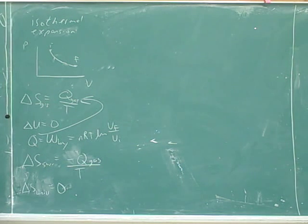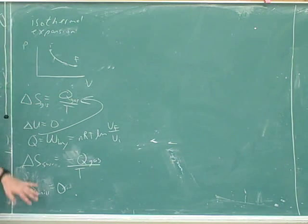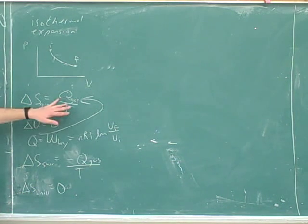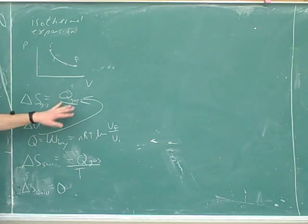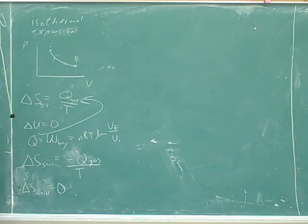Now this makes for really hard test questions because most students are not clear in their mind about the distinction between the gas, the surroundings, and the universe. They don't know when to use this formula and when things are equal to Q over T and when they're equal to zero. So we're going to take our time and try to lay that out.